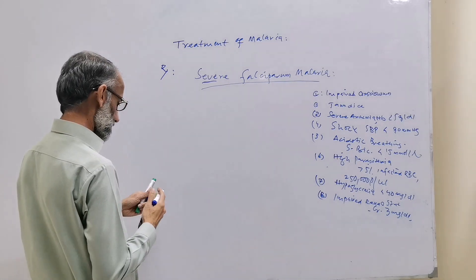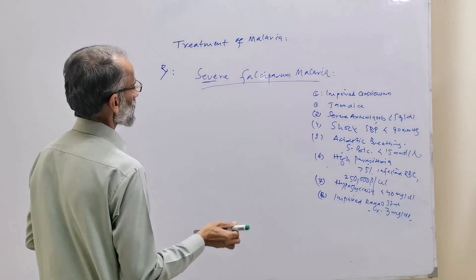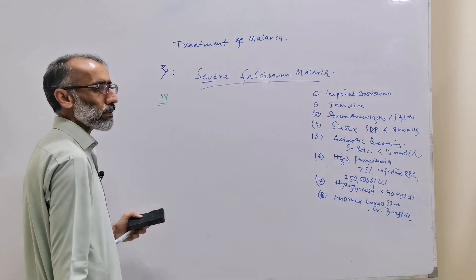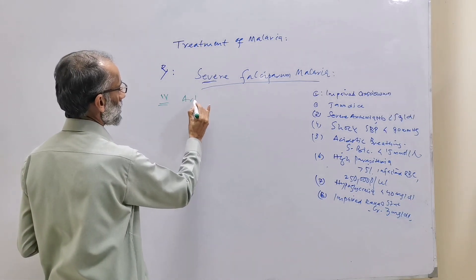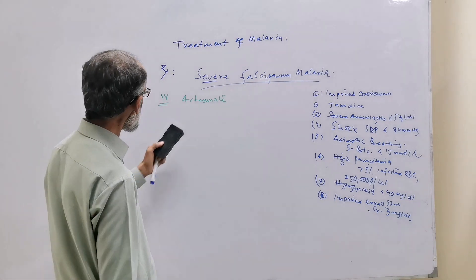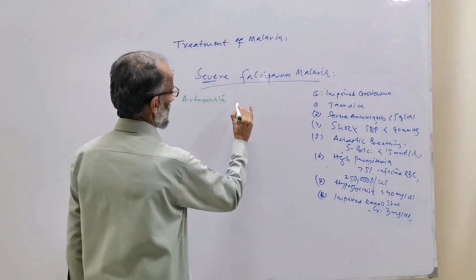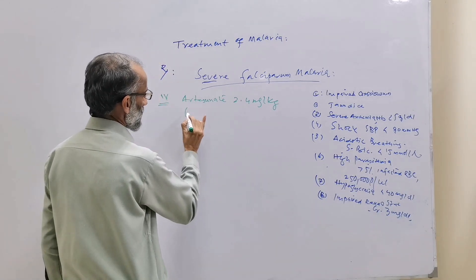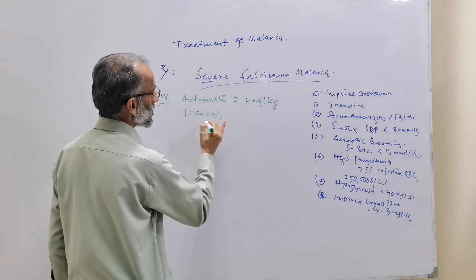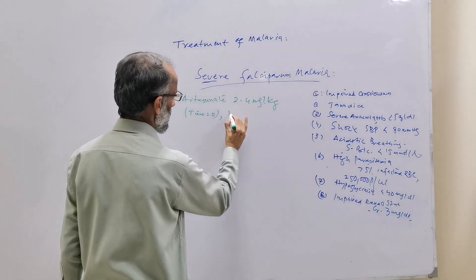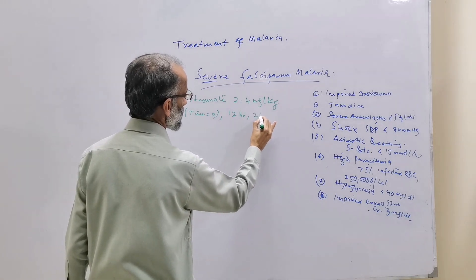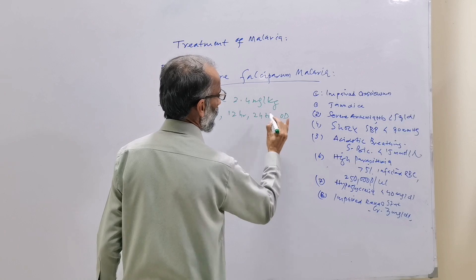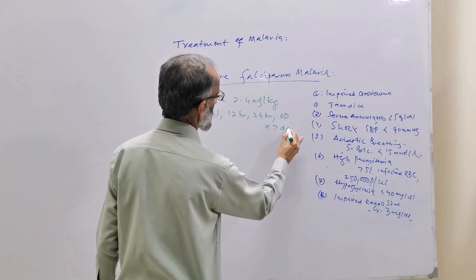The treatment for severe Falciparum Malaria is parenteral IV Artesunate, given 2.4 mg per kg on admission at zero hour, and subsequent doses at 12 hours, 24 hours, and then once a day afterward for seven days.